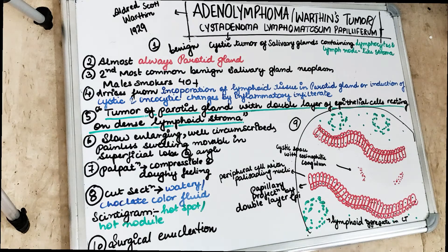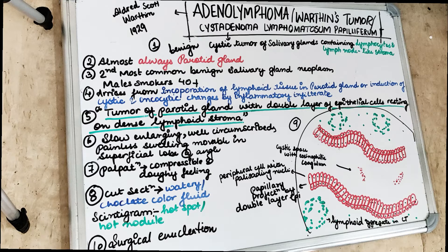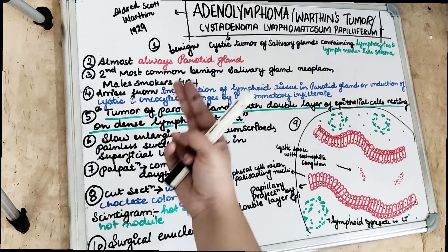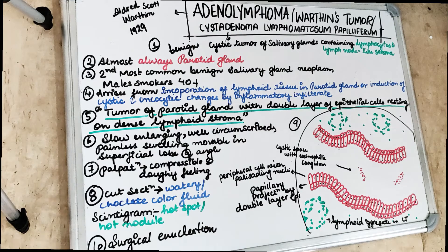Adenolymphoma or Warthin's tumor — as the name suggests, it is named after the pathologist Alfred Scott Warthin, who documented 2 cases in 1929, and hence the name Warthin's tumor.